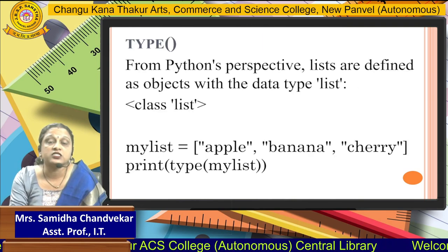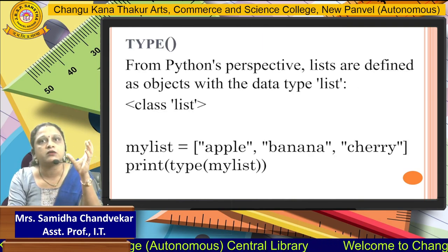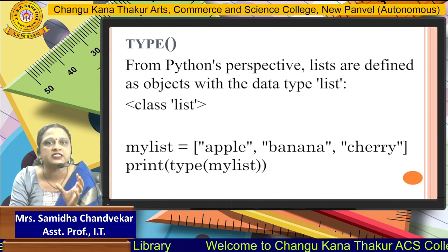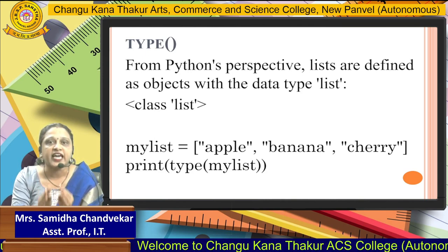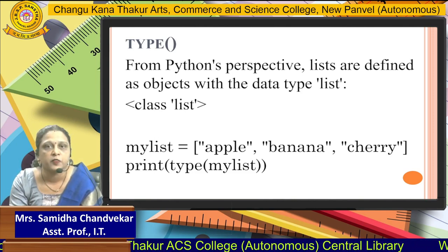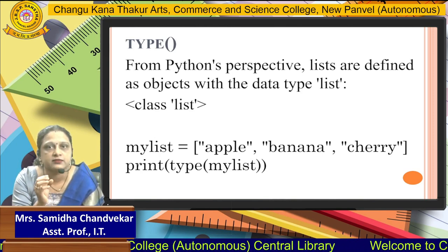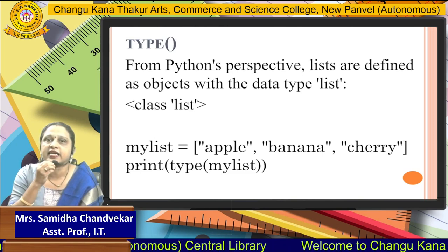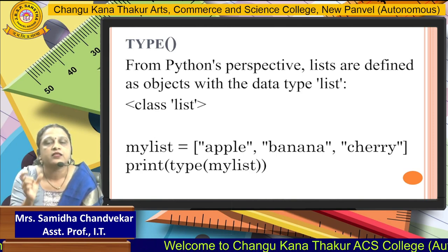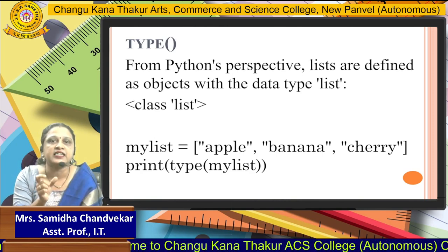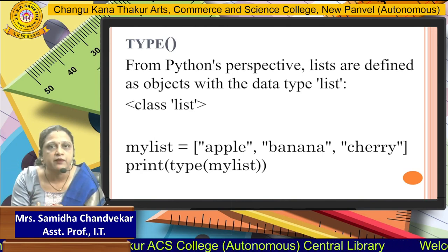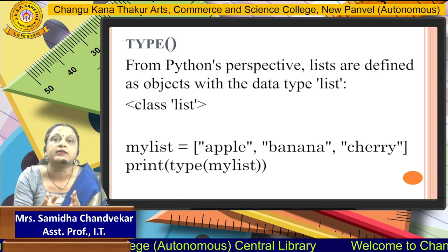Next, what is the type? If you are studying Python, a list is defined as an object and we can get exactly the data type. The data type of a list is class list. If you are declaring a particular list — whether it's a string, number, float, or boolean — when you print type(my_list), you get the output: it's a class list. That means these items belong to the list type.